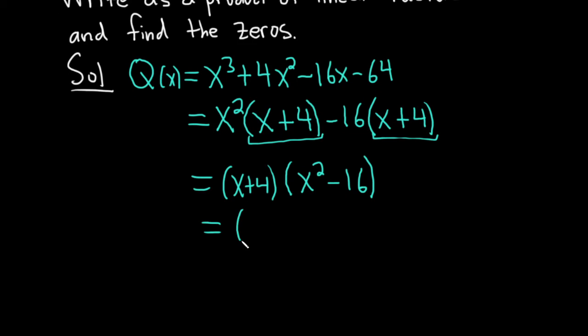Let's keep going. This is equal to x plus 4. This is actually the difference of squares. It's x squared minus 4 squared, so it's x minus 4, x plus 4. And we've done it. We've written it as a product of its linear factors.